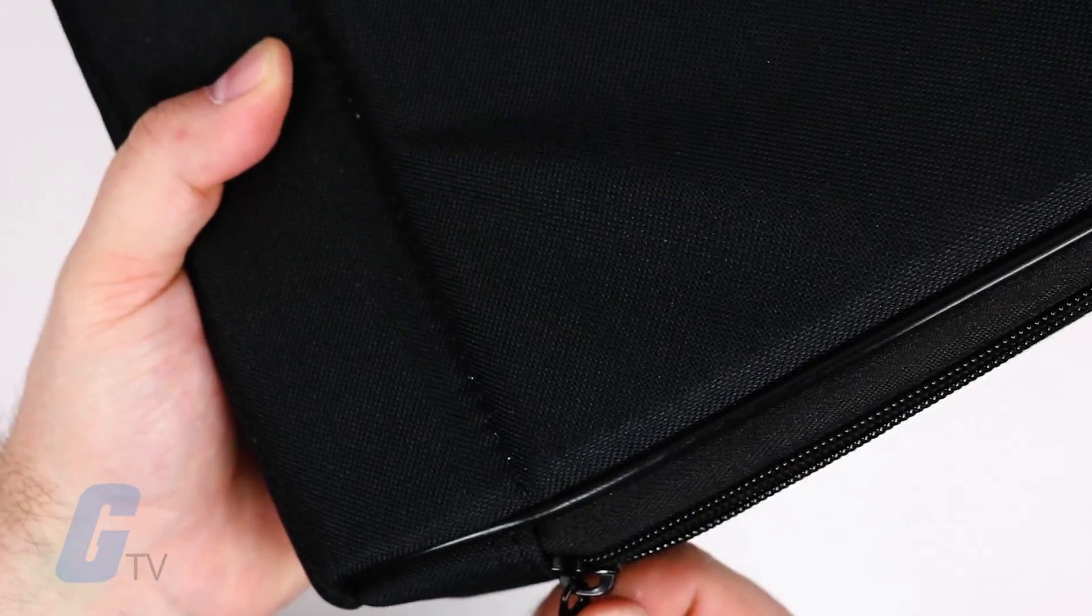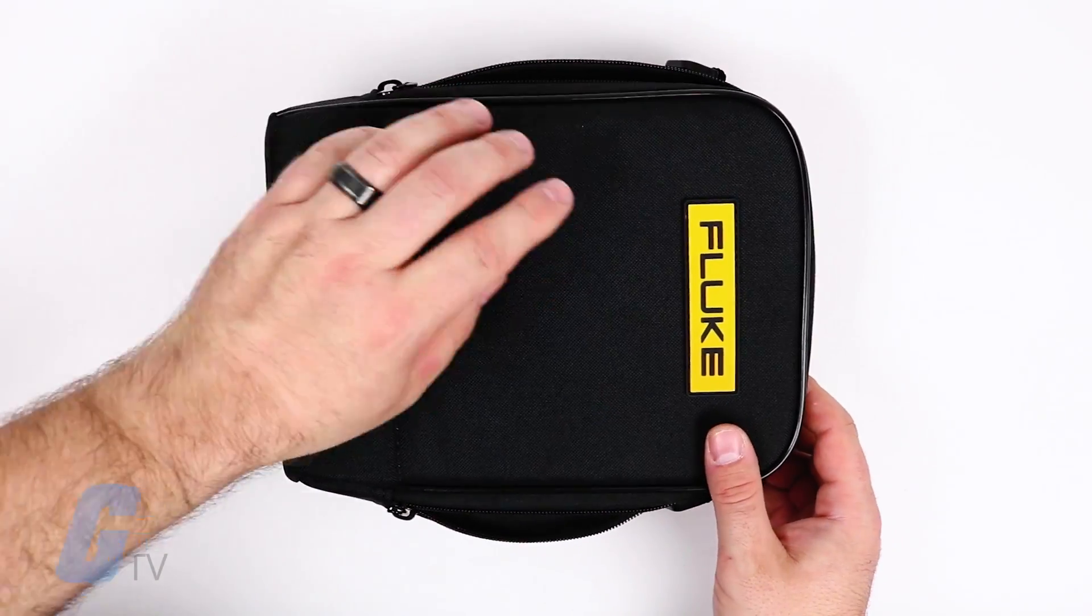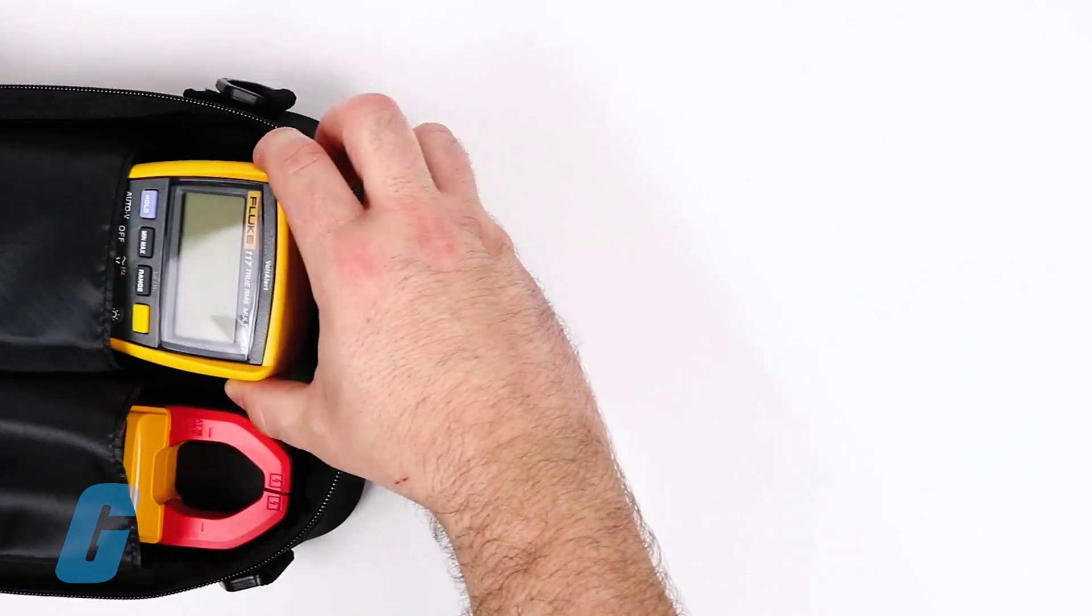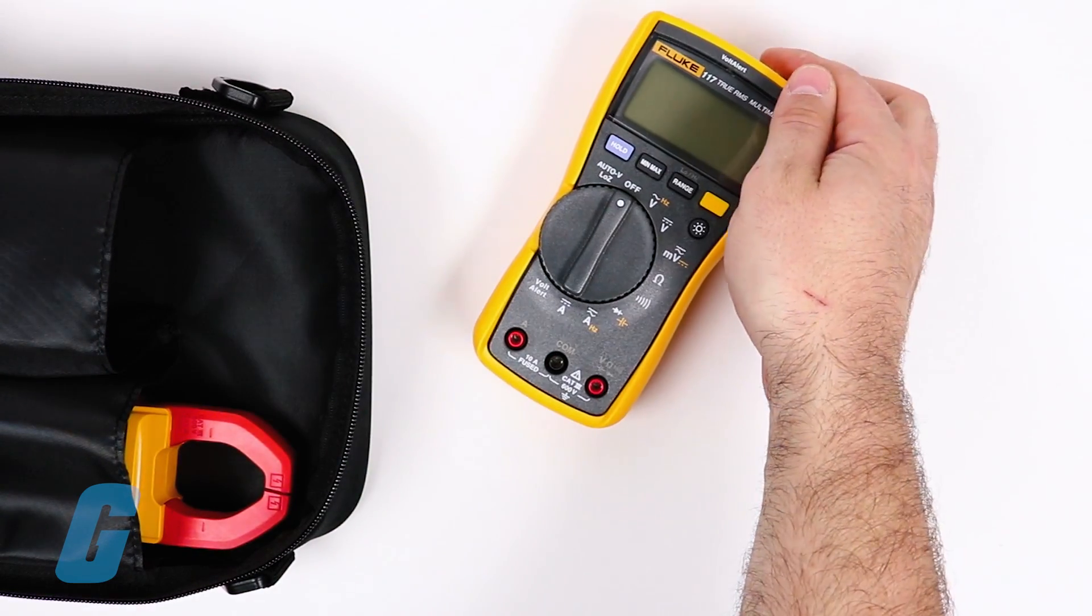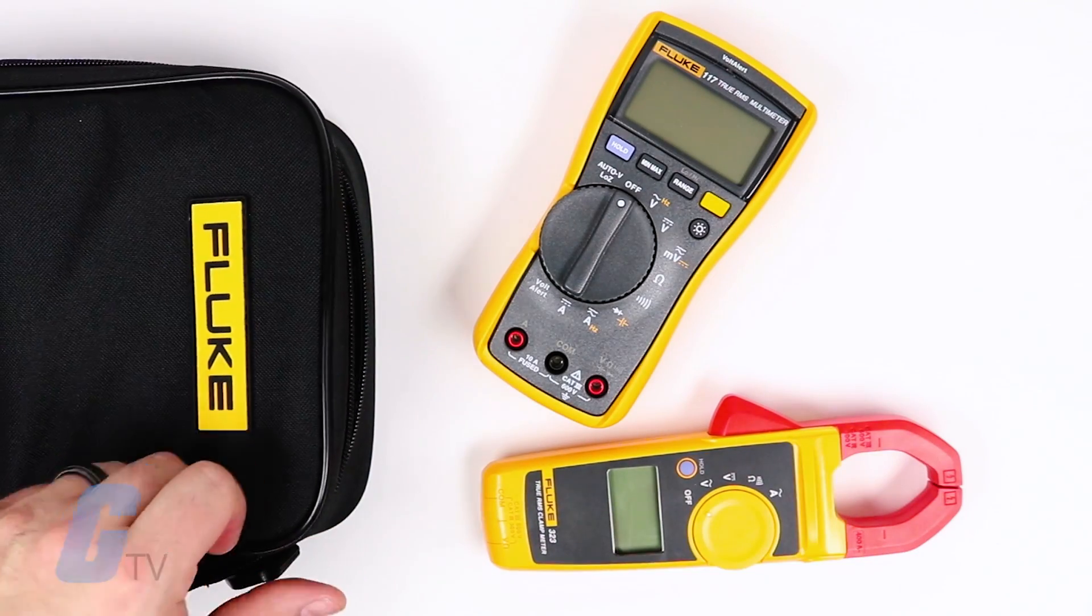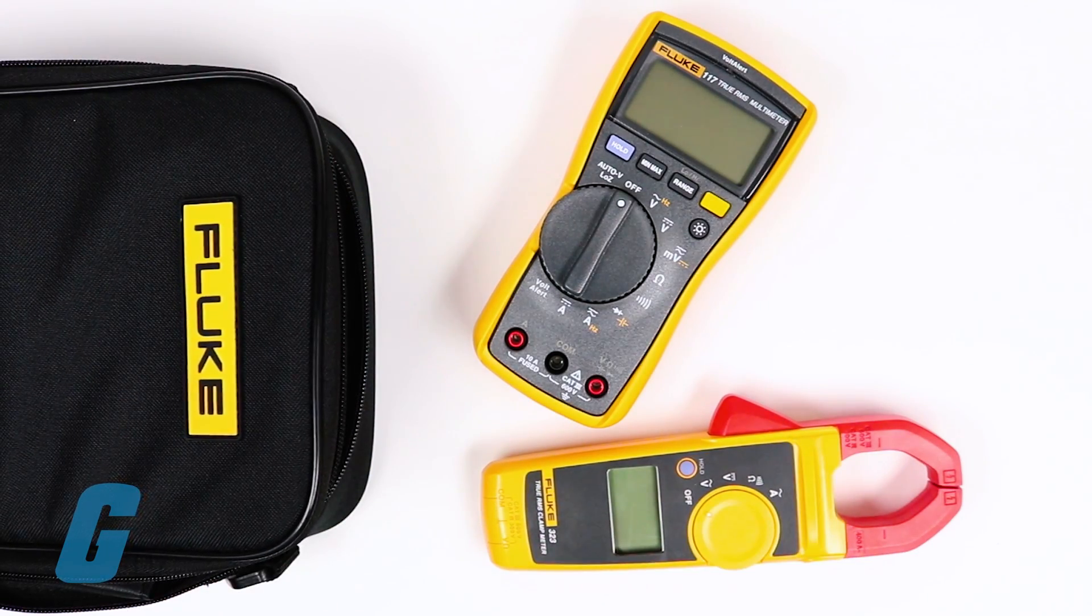Fluke's 117 and 323 Multimeter Combo Kit gives you all of the right tools for even the most complex electrical jobs. This combo kit includes the Fluke 117 Multimeter and the Fluke 323 True RMS Clamp Meter.